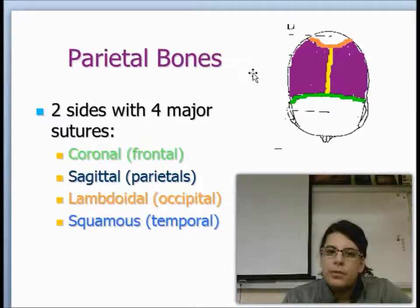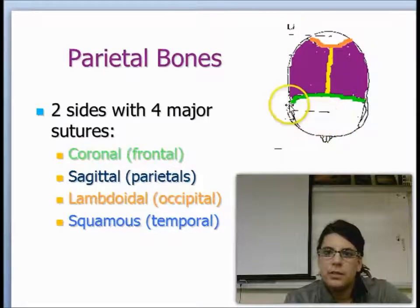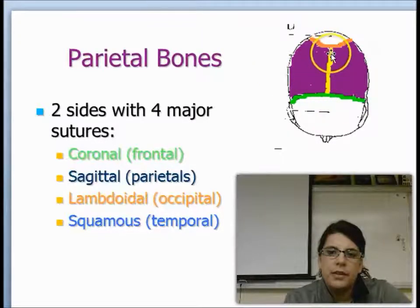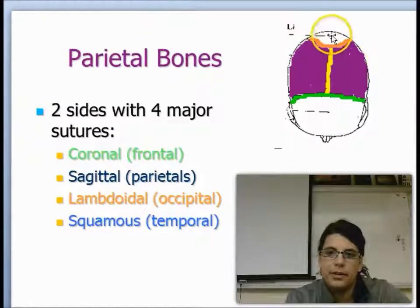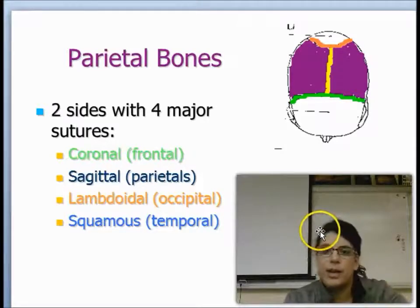Next we're going to look at the two parietal bones. These are bones located at the very top part of your head. There's a line or a suture straight down the middle called the sagittal suture, and it's going to separate the two parietal bones. There's the lambdoidal suture that's going to run most posteriorly, towards the back, and this is going to separate the parietals from the occipital bone. Then there's also a suture on the very side that will separate out your parietal bones from your temporal bones, called the squamous suture.